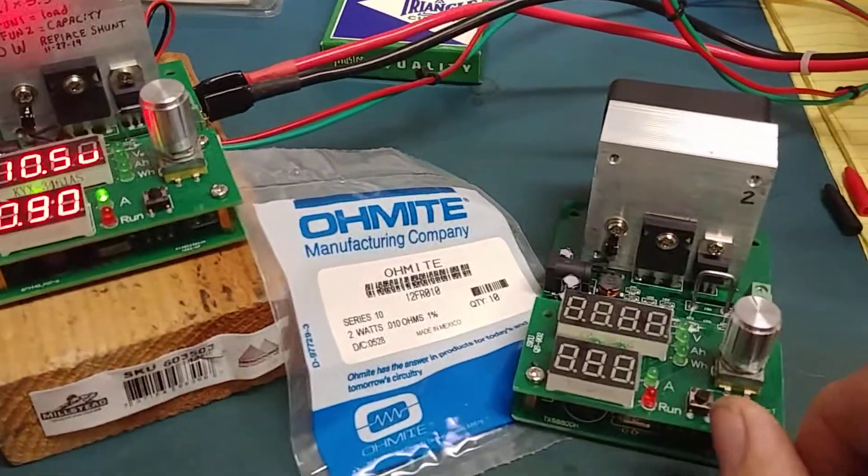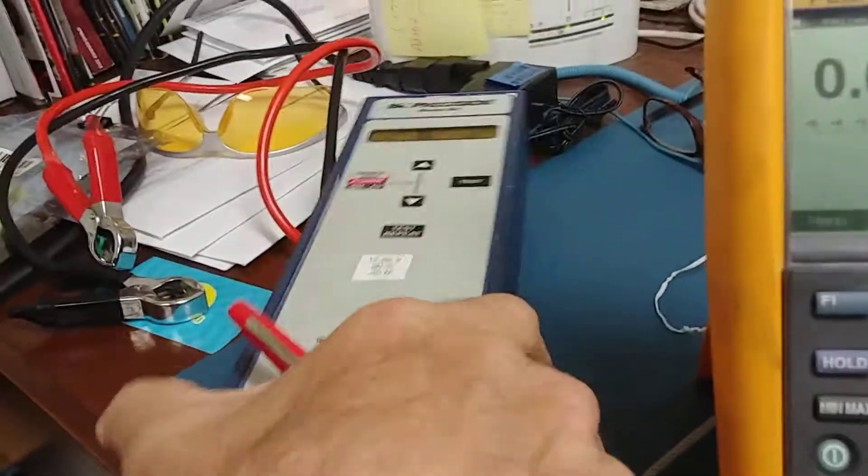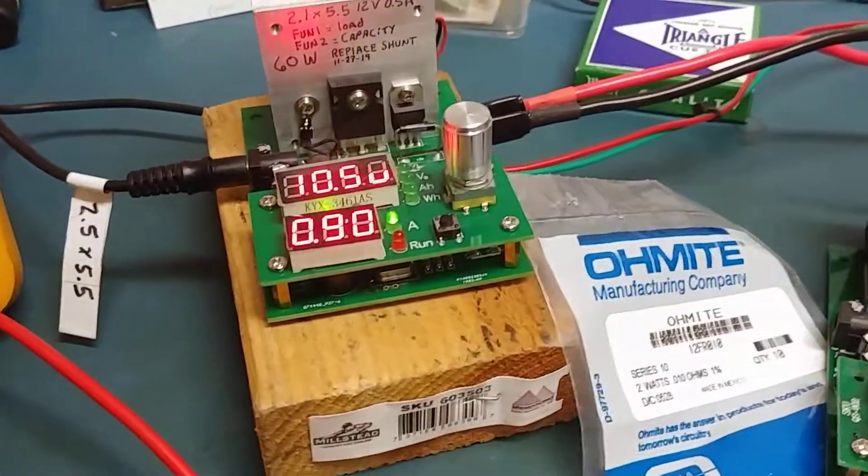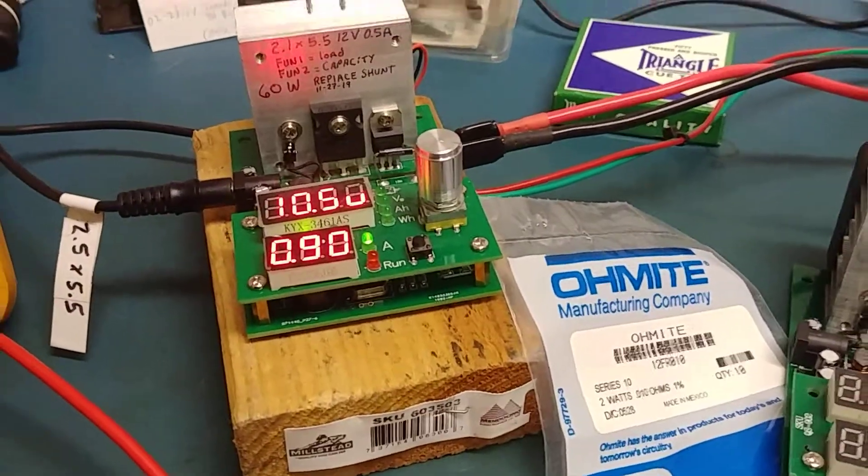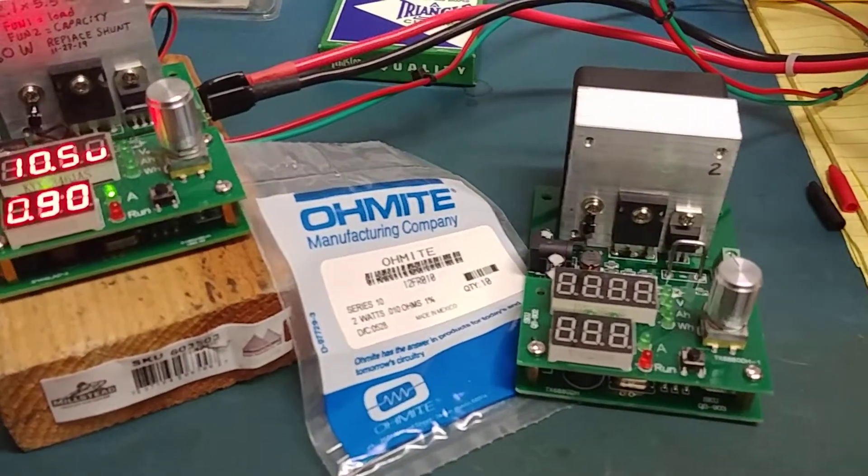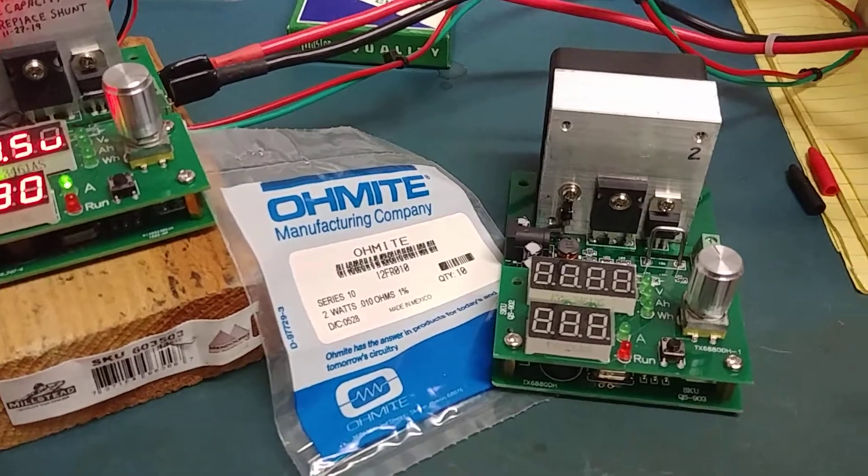We test a lot of batteries around here and we like to run them. I have some quick testers, the BK602 and some other stuff, but ultimately the BK precision testers are good for quick testing, but if you've got batteries that have been out a couple of years and you want to find out what's going on, the best thing to do is a real 20 hour test.